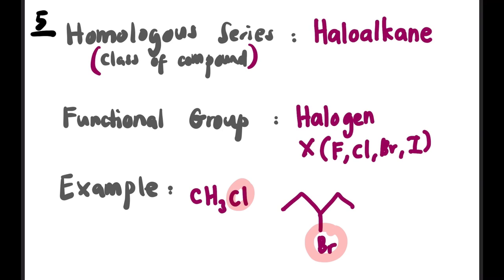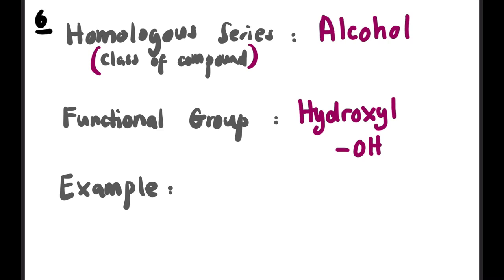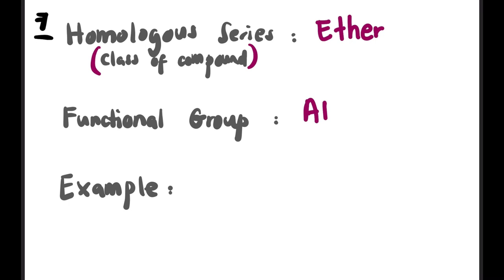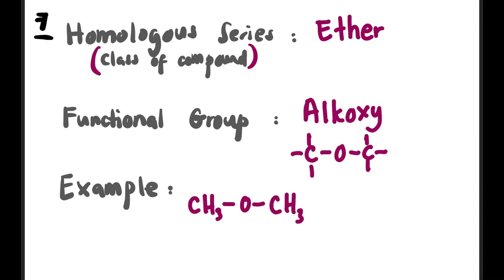The sixth homolog series is alcohol, with the hydroxyl group (–OH) as its functional group. Circle and label –OH wherever it appears. The seventh homolog series is ether, with functional group C–O–C (single bonds). The oxygen is in the middle, not at the end — a C–O–C single bond arrangement.